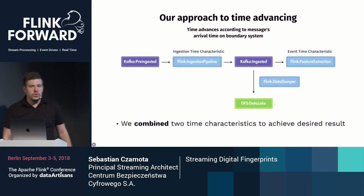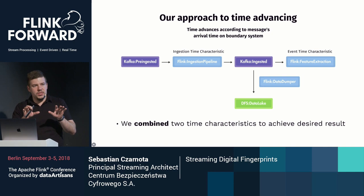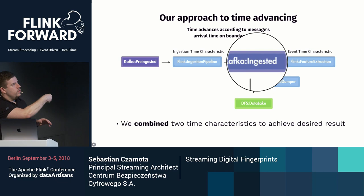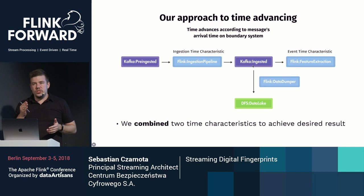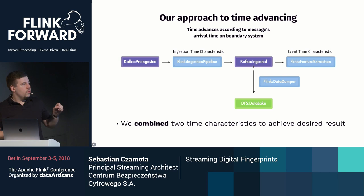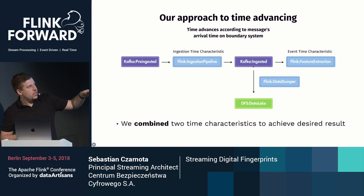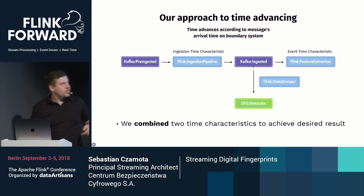We divided our Flink application into two pipelines synchronized at the middle with a special Kafka topic. We do ingestion time characteristic first: when a message enters our system, we assign ingestion time to every message — that's all this pipeline has to do. We assign our trusted system time, then move the message to a Kafka topic. From that point, all further processing can be done in event time securely.